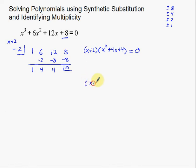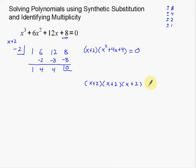I can factor x squared plus 4x plus 4 one more time. I need numbers that multiply to get 4 and add to get 4 — that's just plus 2 and plus 2. So it factors as (x plus 2)(x plus 2). Now notice that I have x plus 2, x plus 2, x plus 2 — all three are exactly the same.